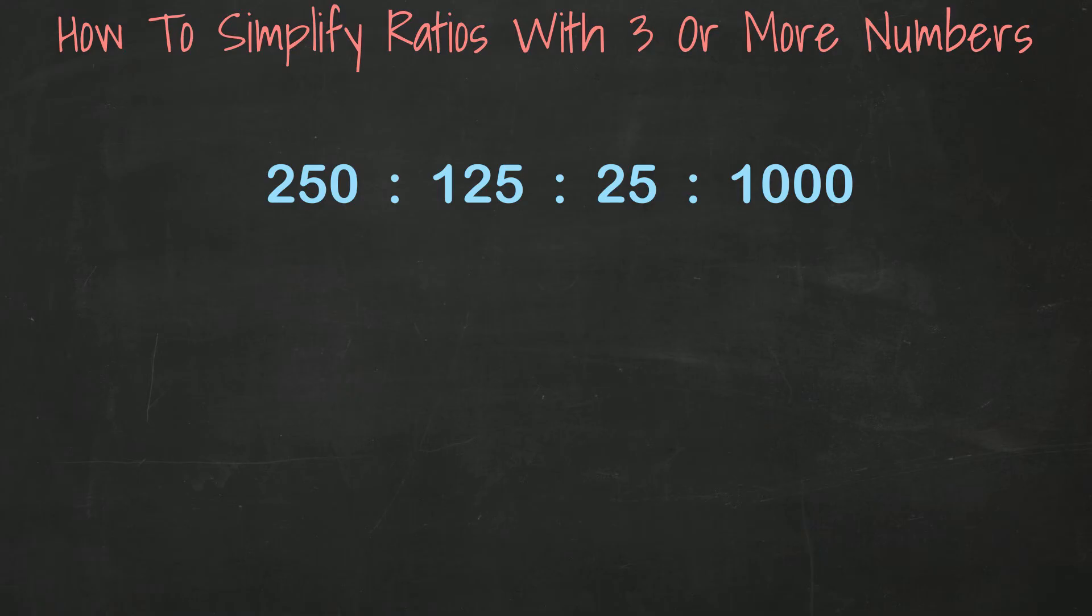I picked this as an example because some of the numbers are large, and I want to show you that even if you don't have the greatest common factor, you can find a common factor and keep reducing until you can't reduce any more. All of our numbers end in either 5 or 0, so it's safe to assume they're all divisible by 5. Let's divide each one by 5 and see what happens.